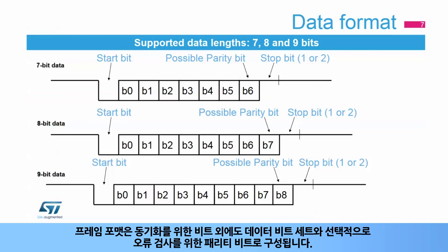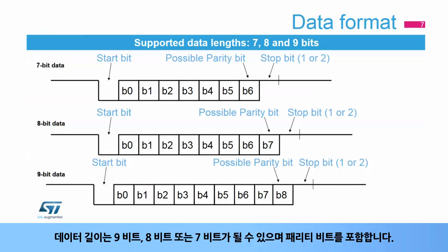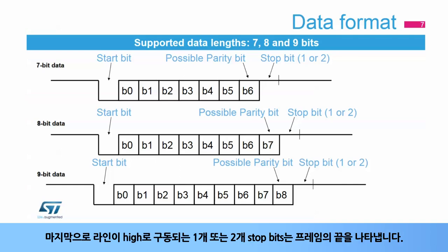The frame format consists of a set of data bits, in addition to bits for synchronization, and optionally a parity bit for error checking. A frame starts with one start bit, S, where the line is driven low for one bit period. This signals the start of a frame and is used for synchronization. The data length can be 9, 8, or 7 bits, with the parity bit counted. Finally, one or two stop bits, where the line is driven high, indicate the end of the frame.